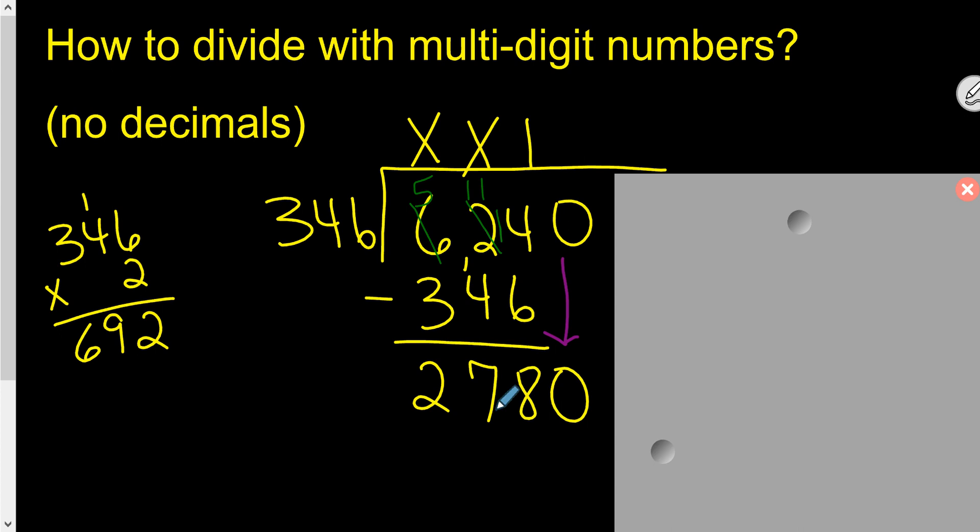Now, can 346 go into 2780? Sure can. How many times? I don't know, nine times? And you see there it's 3,114. So, nope, not nine. Let's go down one. Let's go down to eight.